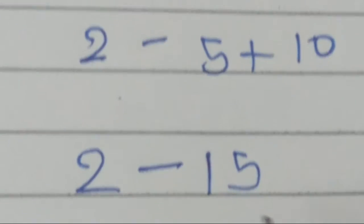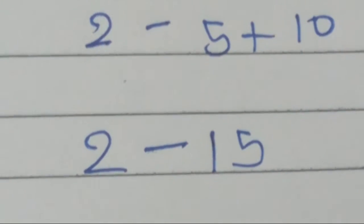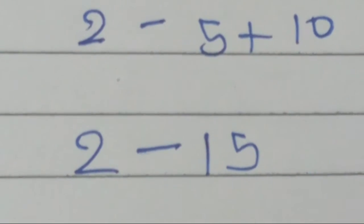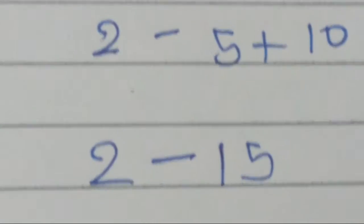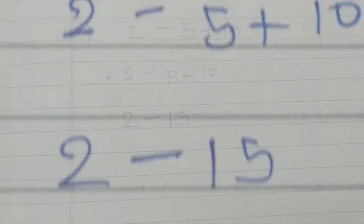So 5 plus 10 is 15. Now if you minus 2 from it, 2 minus 15, you will get the answer. 2 minus 15 is minus 13.